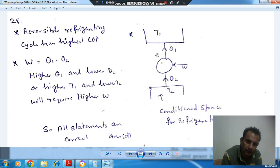So this is the typical refrigeration cycle. Q2 is heat absorbed from the lower temperature, which is the conditioned space for refrigeration. W is the work supplied and Q1 is heat ejected to the higher temperature T1. This is the refrigeration cycle with the conditioned space.